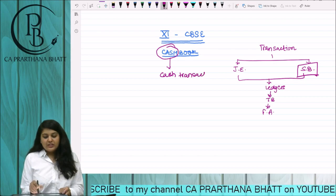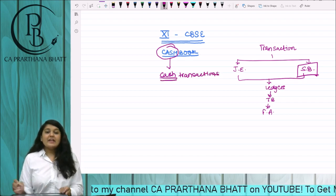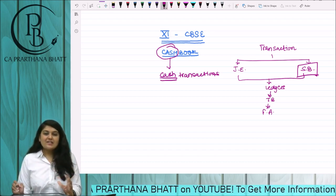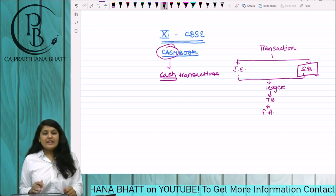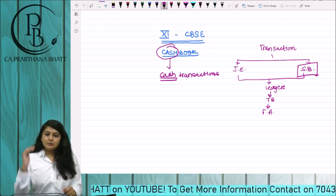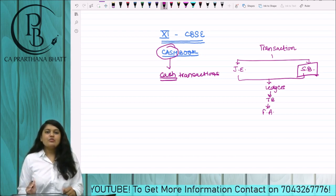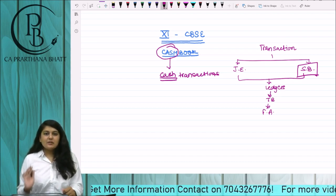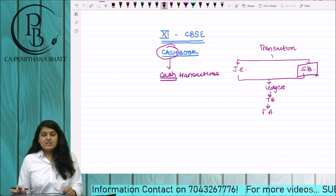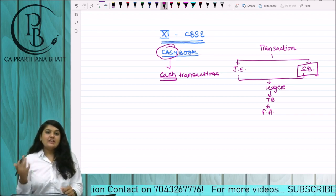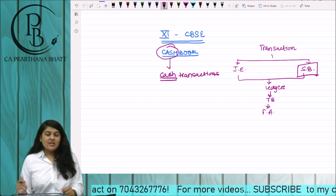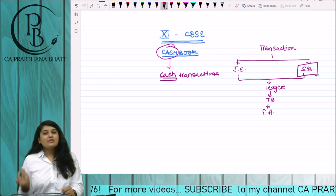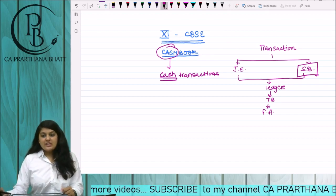It's not only cash — it could be bank also. But the nature of the transaction has to be cash transactions. All the cash transactions will be recorded in the cashbook. We are going to understand various types of cash books. Let me tell you a simple thing about how the simple cash book is made. Let's study with a good example — what types of transactions we record and what is the format.